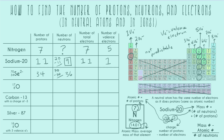For the total number of electrons, this is the first example where we do have charge information. The charge is negative 2, which means we have two more electrons than protons. With 34 protons, we get 36 total electrons. For the number of valence electrons, a neutral selenium is in the sixth column, so it normally has six valence electrons. But since our selenium has a charge of negative two, it has an additional two electrons, giving it eight valence electrons.